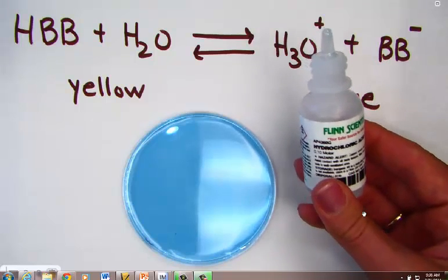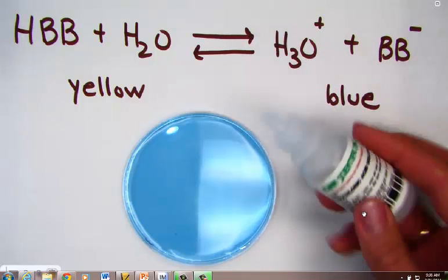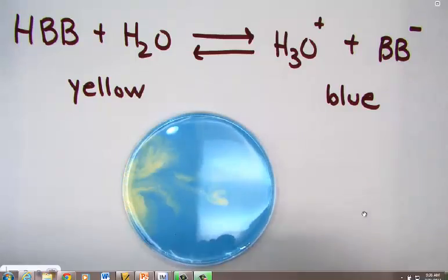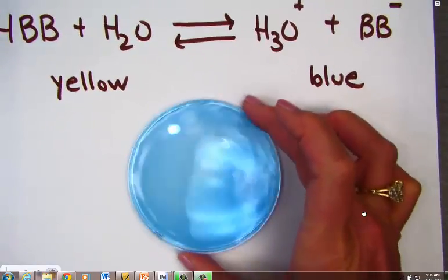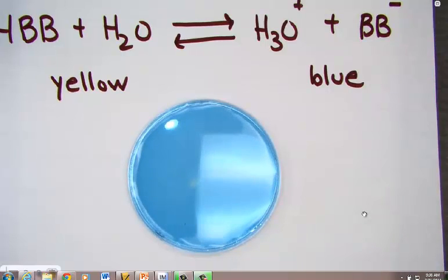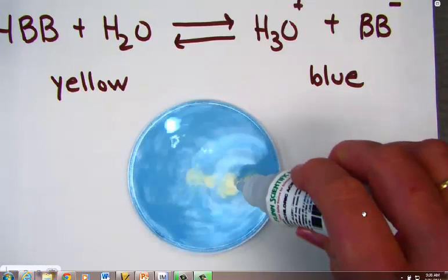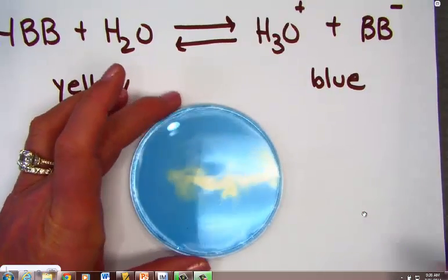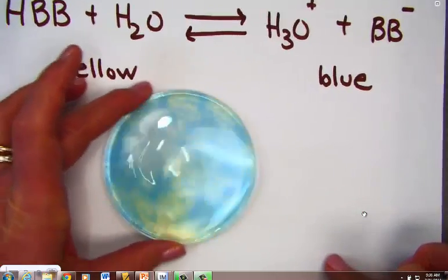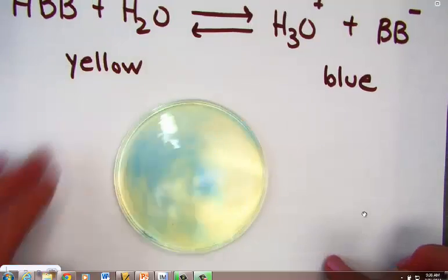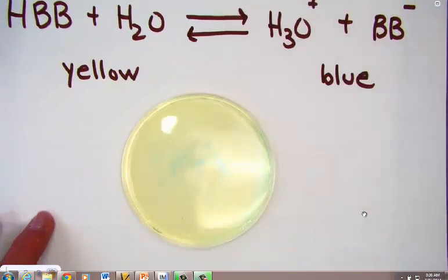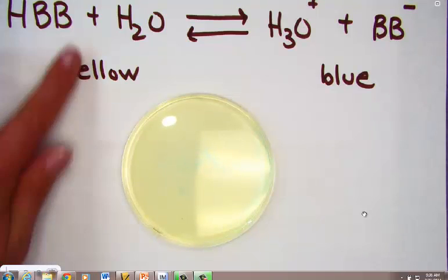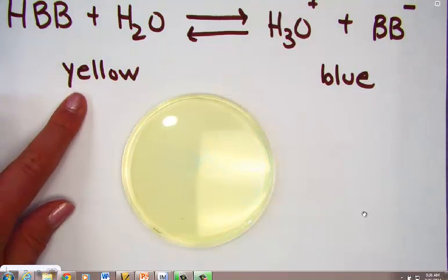Let's add hydrochloric acid, HCl. Upon addition here, we'll see a color change. For the volume of base I've added, I need to add a little more acid to get it to change color and stay. I can now see that the yellow has appeared. I must be on this side of my equilibrium.